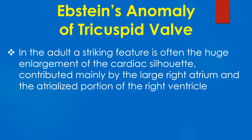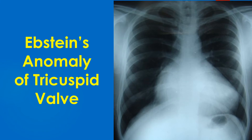In the adult, a striking feature is often the huge enlargement of the cardiac silhouette, contributed mainly by the large right atrium and the atrialized portion of the right ventricle. This X-ray from a person with Ebstein's anomaly shows cardiomegaly and right atrial enlargement. Cardiomegaly with relative oligemia of the lung fields and reduced cardiac motion can produce a stenciled-out appearance in Ebstein's anomaly.